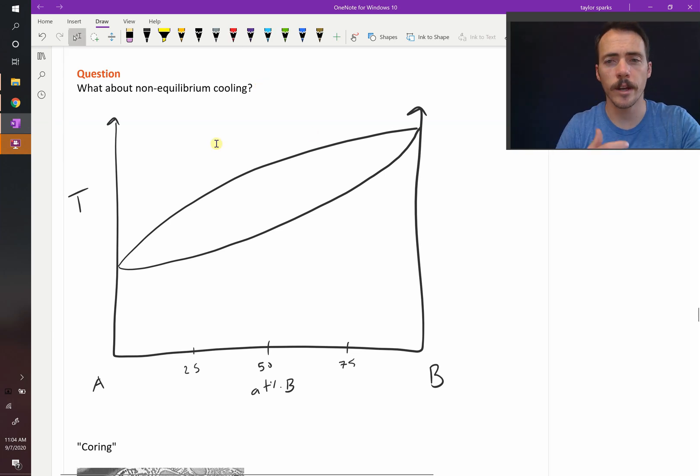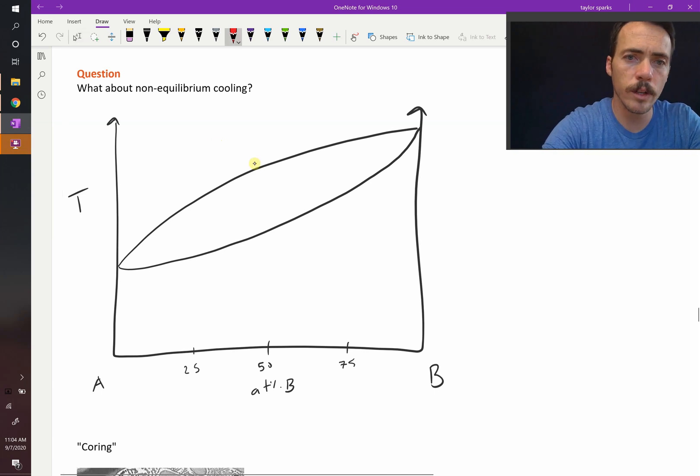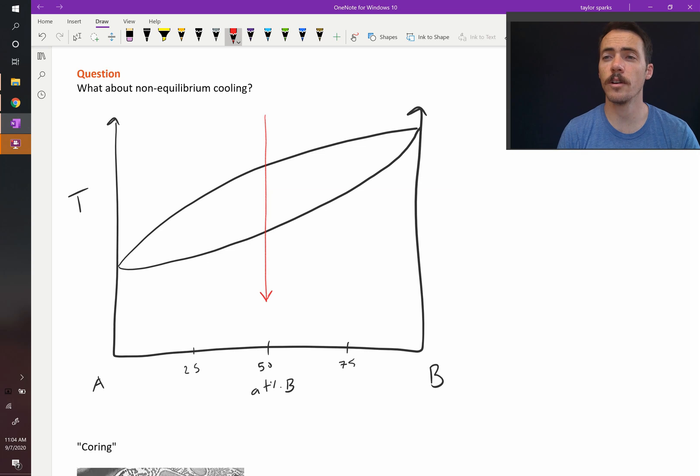Let's say we take this phase diagram with atoms A and B—a simple binary isomorphous solid solution diagram. We're going to cool it down at 50-50, and our initial composition is 50 atomic percent B. So there's just as much A as there is B in the liquid.